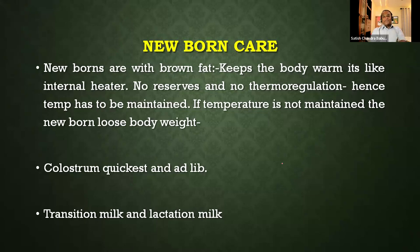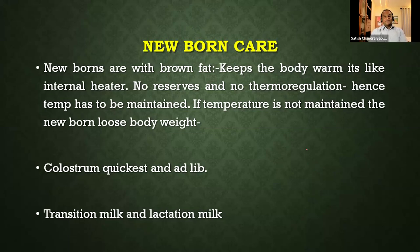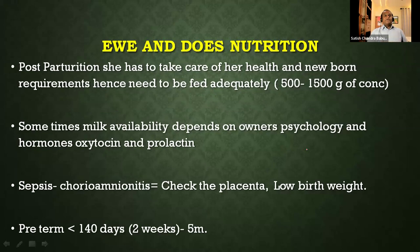If the baby is not getting an adequate amount of milk, it loses body weight by using its body reserves, and the brown fat is used up to keep warm. As a thumb rule, colostrum — the most important first milk — should be fed at the earliest. We should go for feeding an adequate amount during the transition and lactational period. The ewe's and doe's nutrition is very important post-partum as she must take care of both her own health and the newborn's.